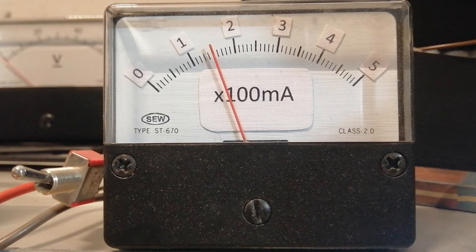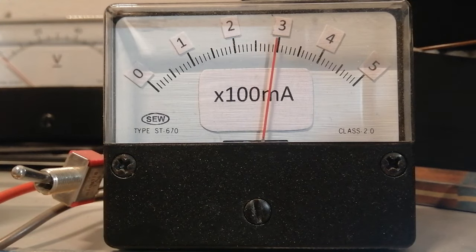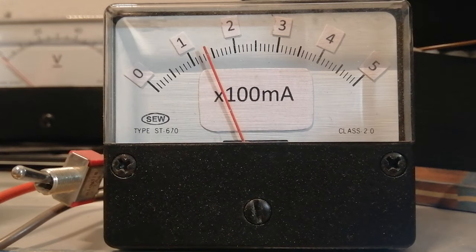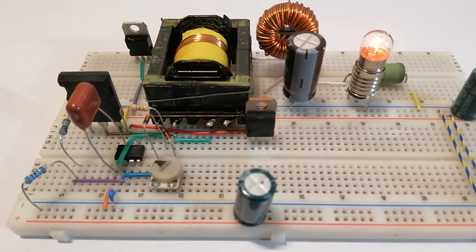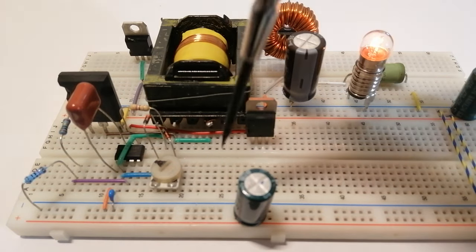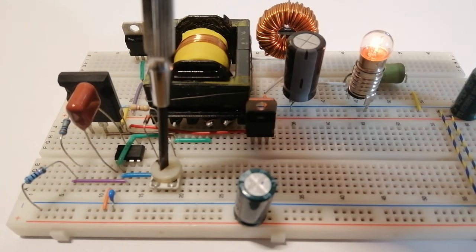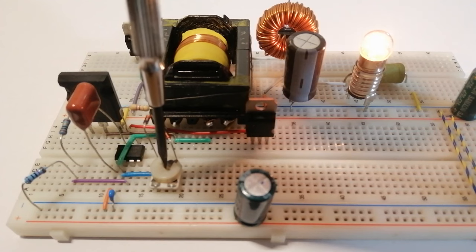Now if we observe the current at the input of the circuit we can see that it rises as we increase the duty cycle and at a certain point it kind of spikes. And this is because the demagnetizing coil doesn't have enough time to fully demagnetize the core. This means that there's a residual field at the end of the period and the new period starts with the core already partially magnetized. This makes the core saturate and pulls way too much current than it should.